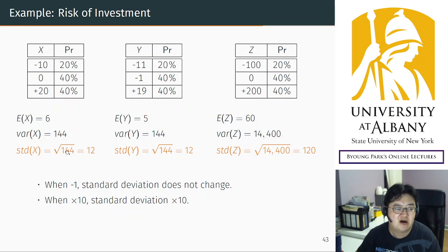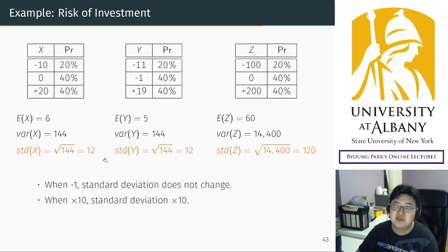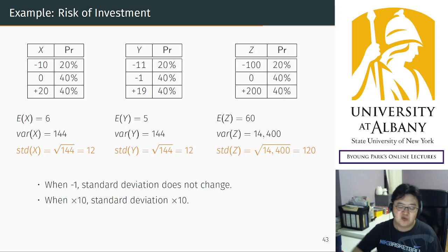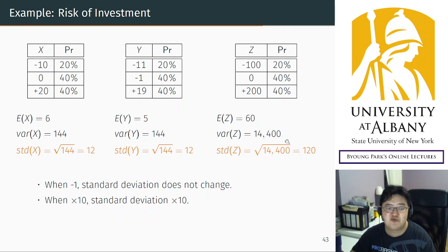The calculation of standard deviation is exactly the same as variance but with the additional step of taking the square root. For example, the square root of 144 is 12, and if you take the square root of the transformed variance you get 120 — exactly 10 times the original standard deviation. So this is what we wanted: it is now a unit consistent measure. When you change the unit, the standard deviation follows the scale of the new unit.